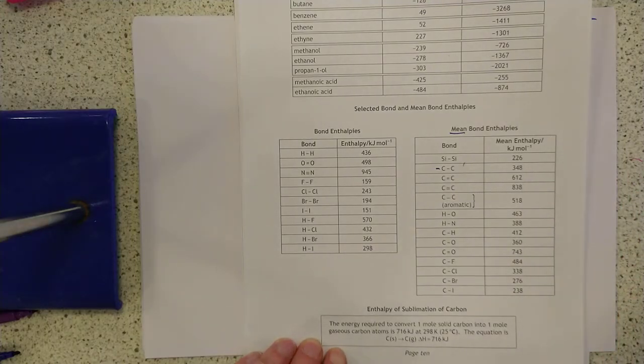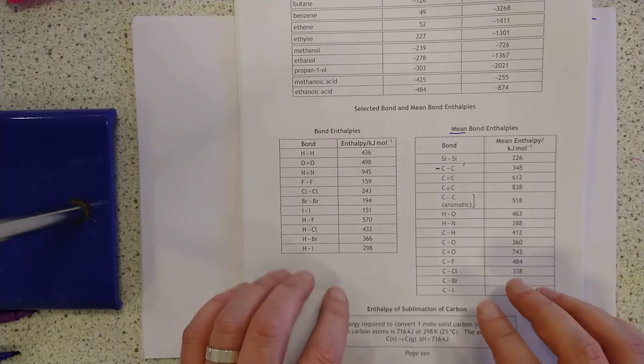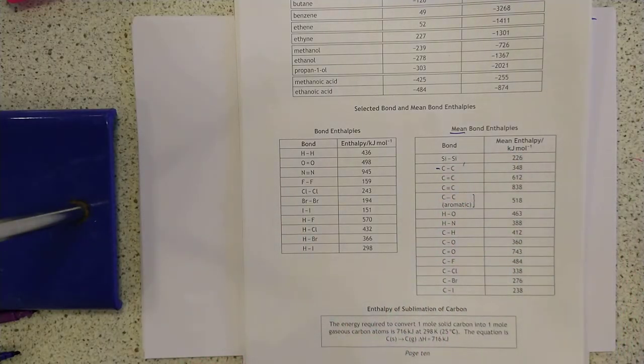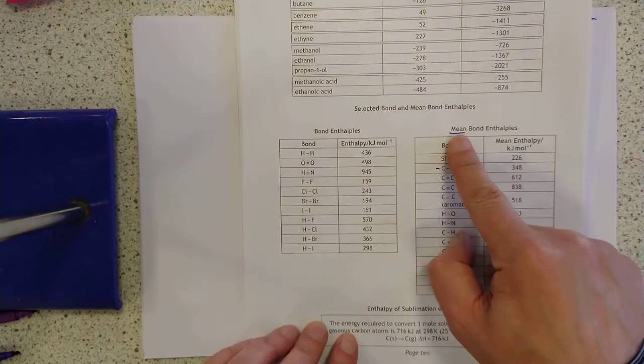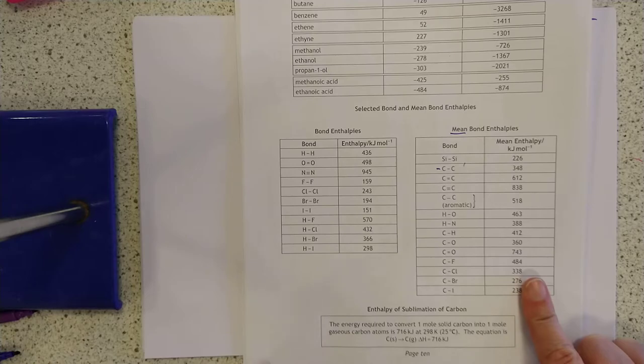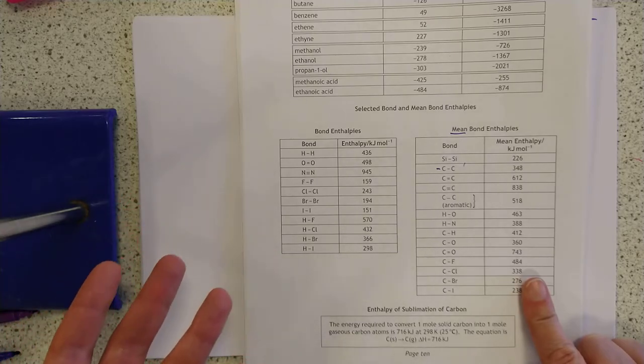A favorite question for the SQA is they get you to work out an enthalpy change using these numbers. And then they describe an experiment with enthalpy changes actually measured. And they ask you to explain why the two are not really identical. And that is the key. Because these are averages, so therefore they will not be correct. Whereas the actual stuff you react, that's obviously correct.